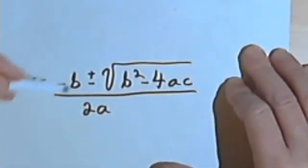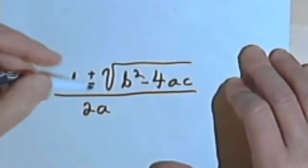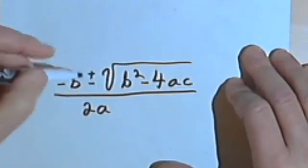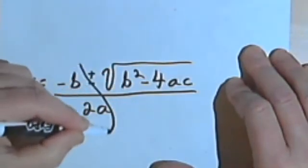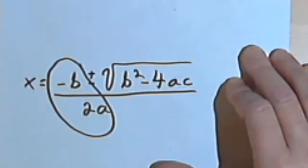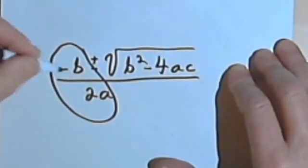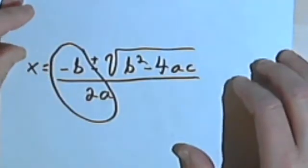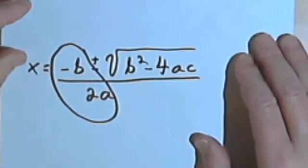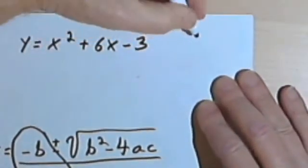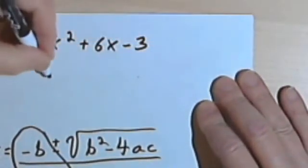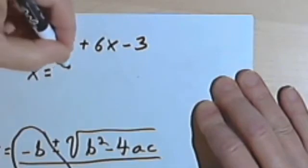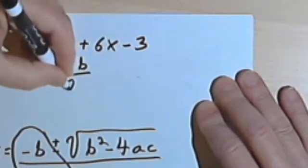You've probably been exposed to that somewhere along the line. Well, we're going to not worry about that radical part, and we're just going to look at the negative b over 2a. x equals negative b over 2a is the formula for finding the x value of the vertex.